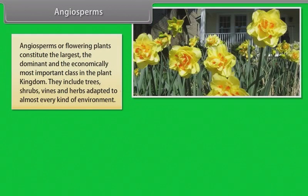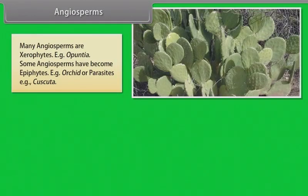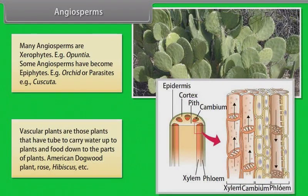Angiosperms or flowering plants constitute the largest, the dominant and the economically most important class in the plant kingdom. They include trees, shrubs, vines and herbs adapted to almost every kind of environment. They are primarily land plants but some hydrophytes like Hydrilla and water lilies have taken to water secondarily, and even ocean water like Zostera eel grass. Many angiosperms are xerophytes like Opuntia. Some angiosperms have become epiphytes like orchids or parasites like Cuscuta. Vascular plants are those plants that have tubes to carry water up to plants and food down to the parts of plants, like American Dogwood plant, Rose, Hibiscus, etc.